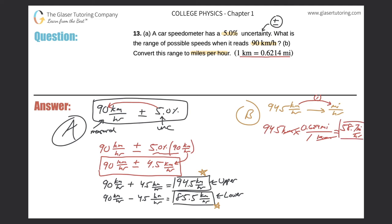Okay, that's the upper limit. And then the second part now was going to be to take the 85.5 kilometers per hour and convert that into miles per hour.